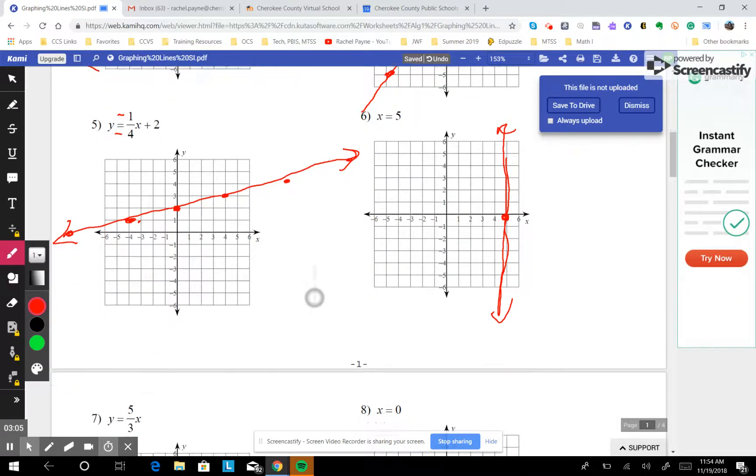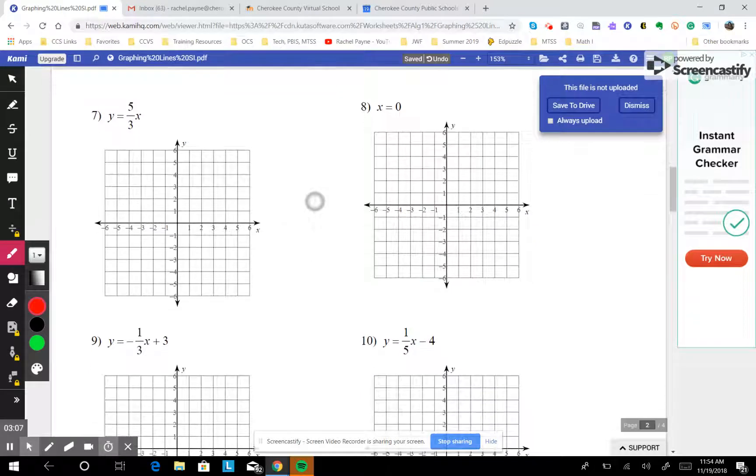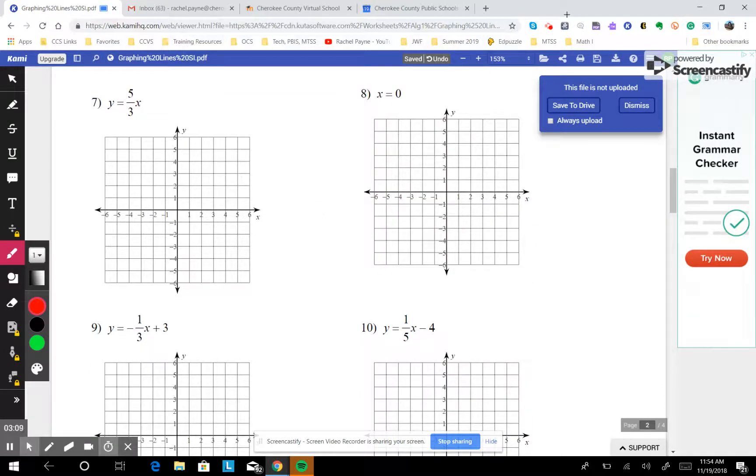Real easy. Scroll down. I'm going to do a couple more. This one, there's no number on the end here. There's no starting place. So you just start at 0, because you can put plus 0 or minus 0, whatever you want to on the end there.